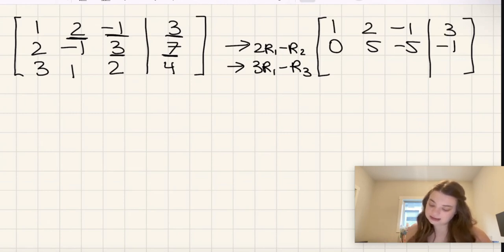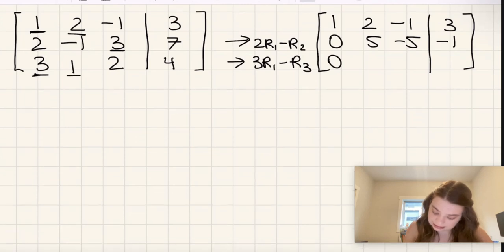Alright. And now we'll do the same thing for the last row here. So we're going to do 3R1 minus row 3. Okay, so 3 times 1 is 3, minus 3 is 0, which is the whole point of us doing this. Then 2 times 3 is 6, minus 1 is 5.